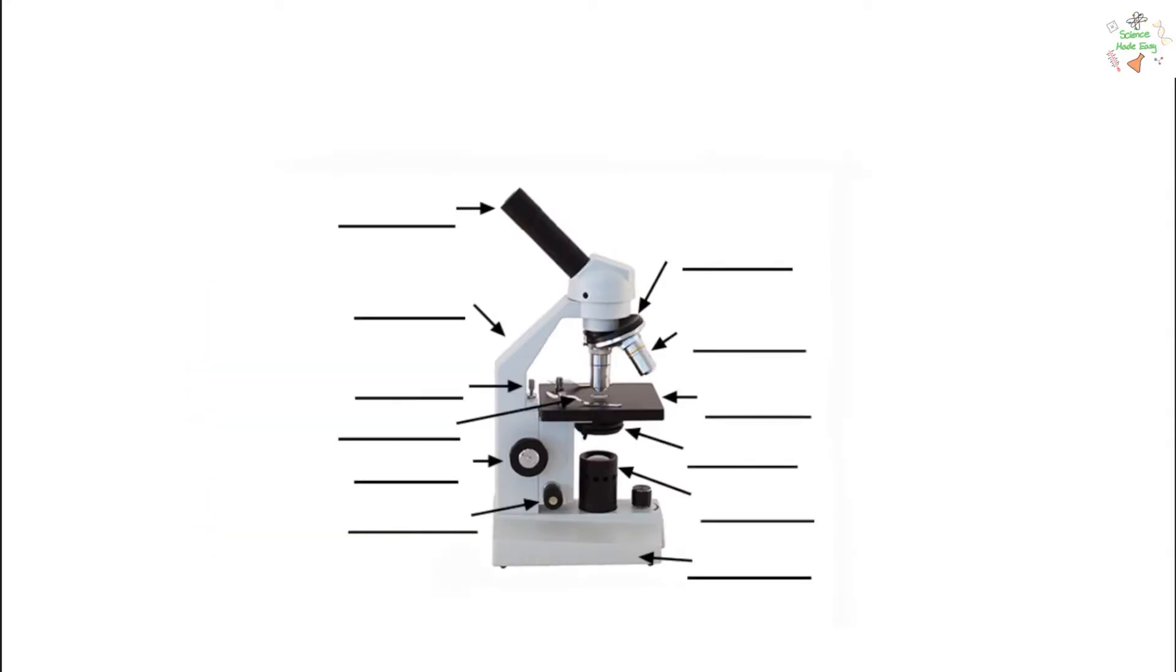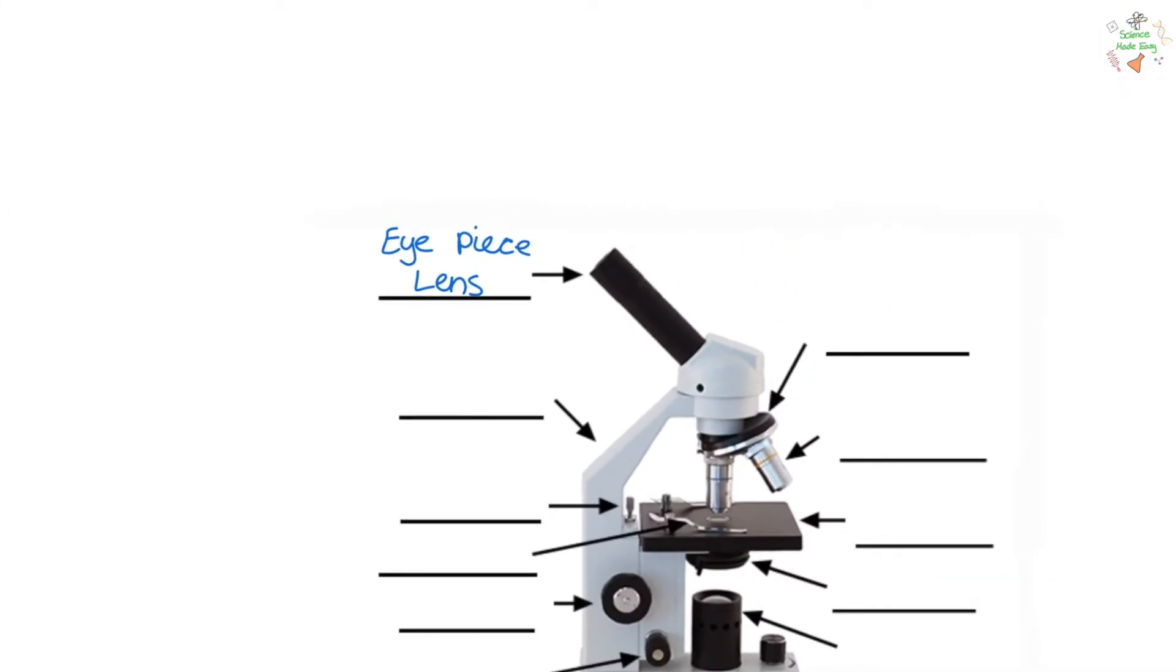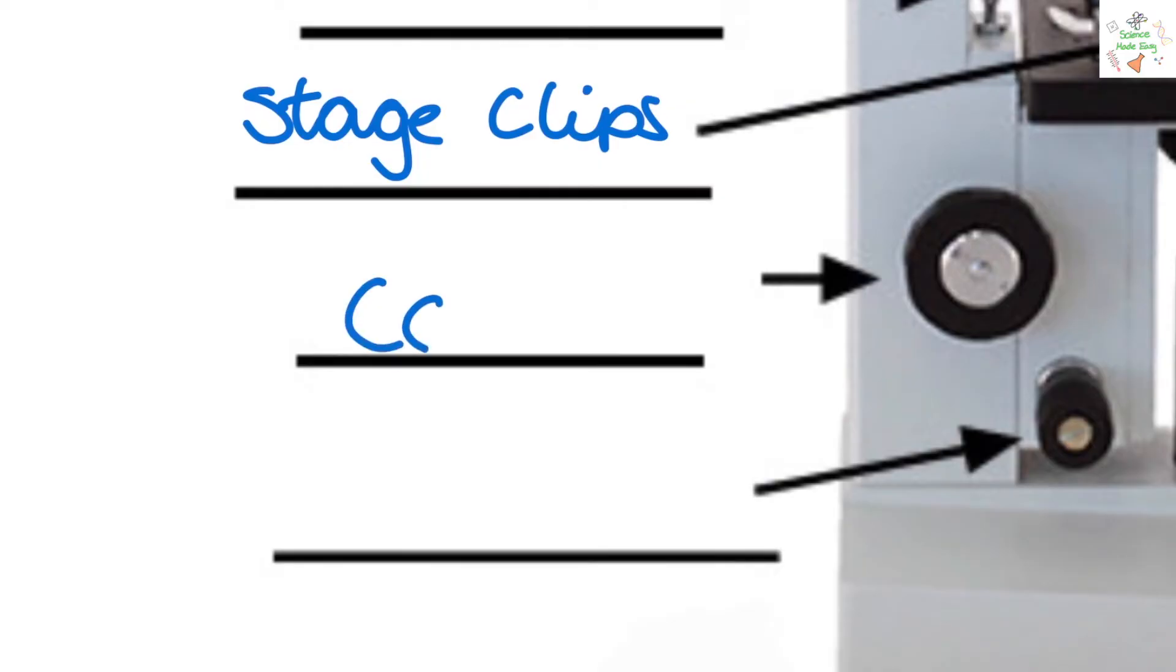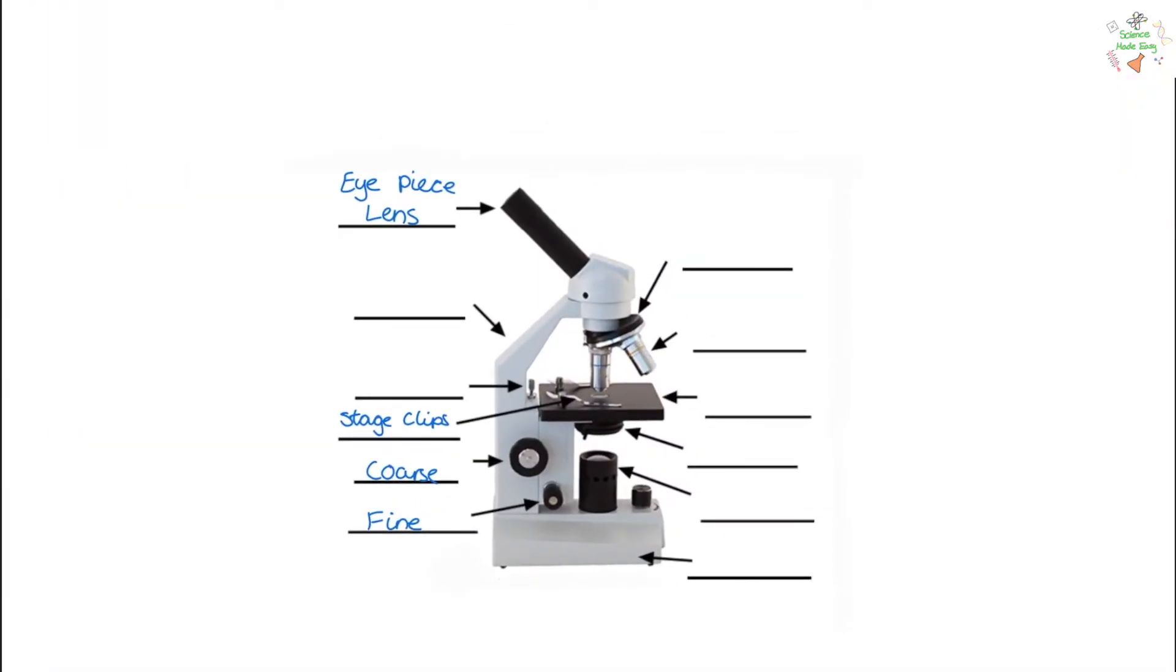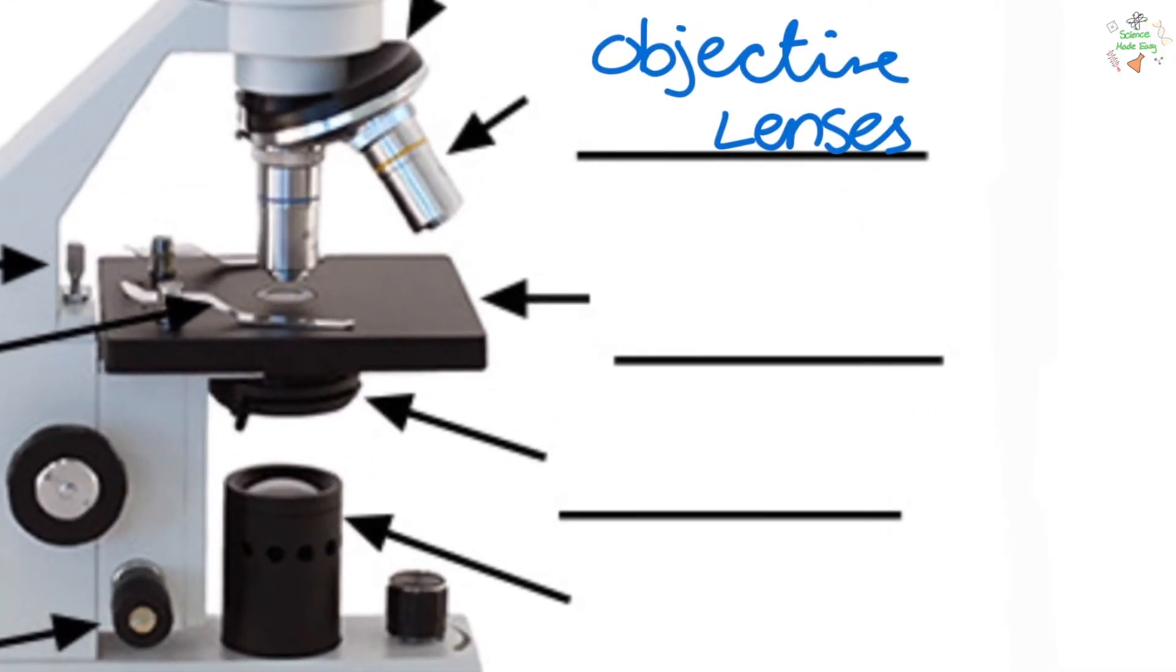So to look at these cells we need microscopes. This is a light microscope. At the top we have the eyepiece lens, which is the part that you look through. We have the stage clips, which hold down the slide. The coarse and fine focus wheels, which you can turn to make the image clearer. The objective lenses, which magnify the image. The stage, and the light.